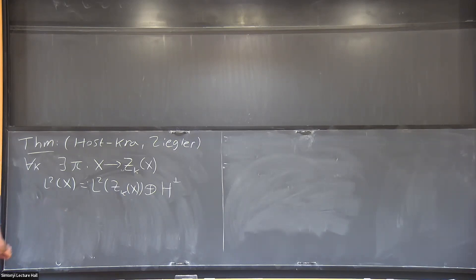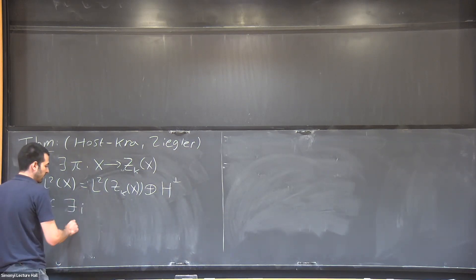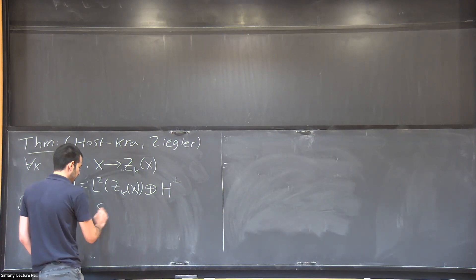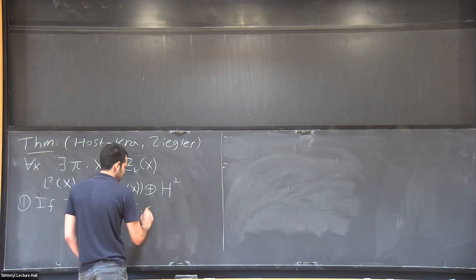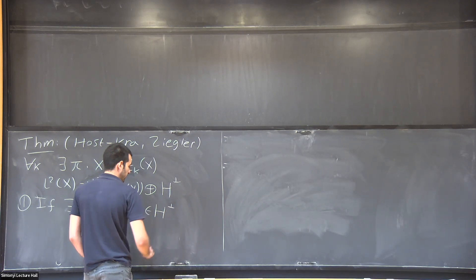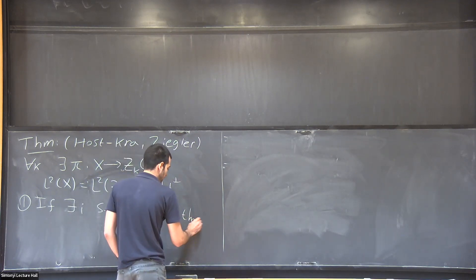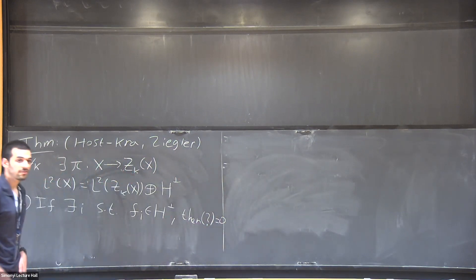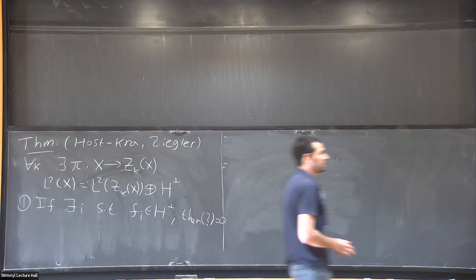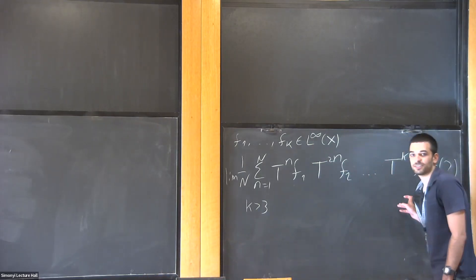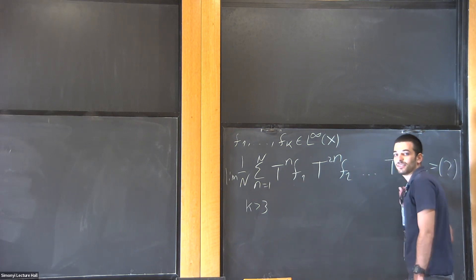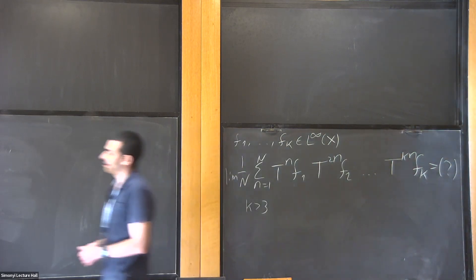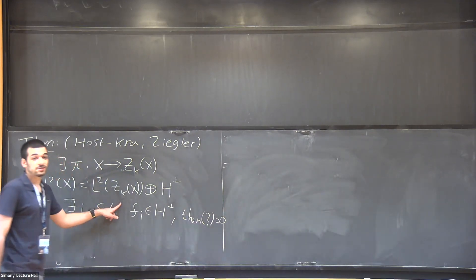And this decomposition has very nice properties. The first one says that this factor is very important. So if there exists even one index i such that one of the functions is in the complement, then this average exists and equals zero. And since this term here is linear in all of these functions, this means that if you're only interested in the limit, you can sort of assume that X equals Z_k(X).